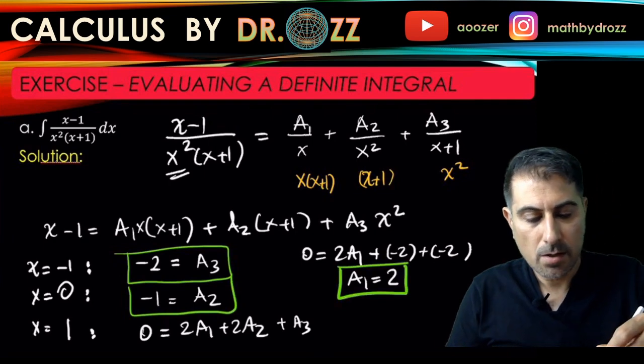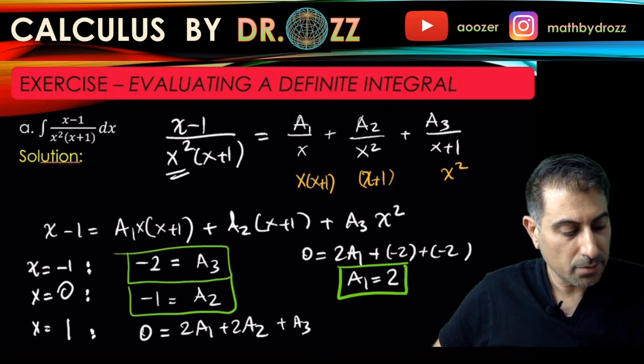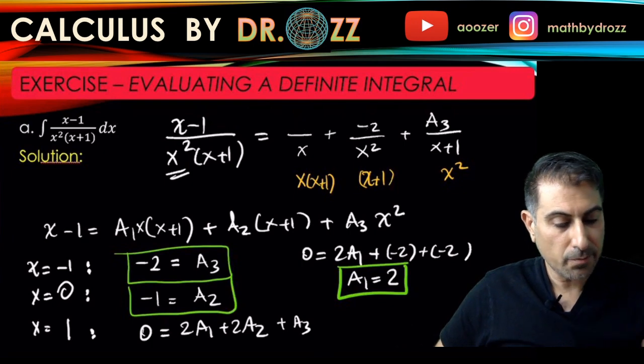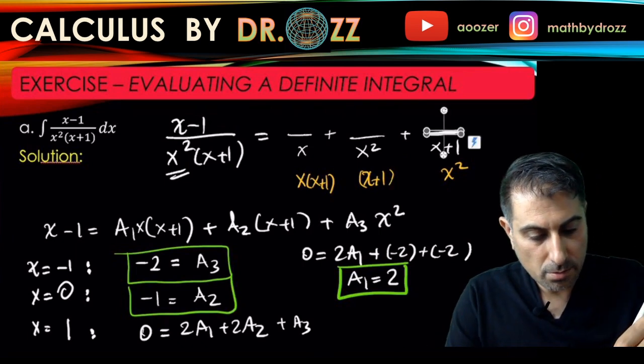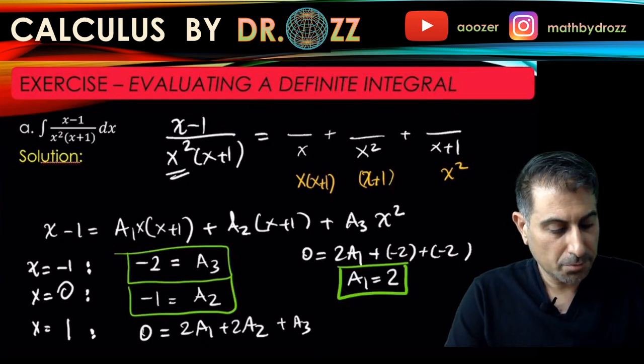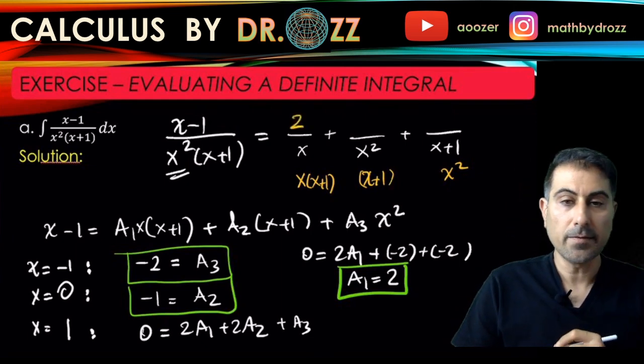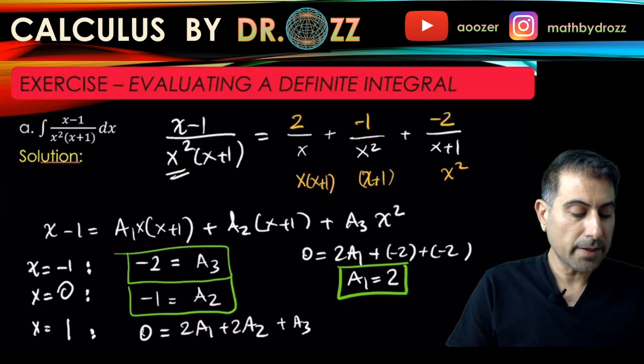All right, so I can go back here and simply replace those A1, A2, A3s by what I came up with here. So A1 is 2, A2 is negative 1, A3 is negative 2. And I can erase all the rest here. I don't need them anymore.